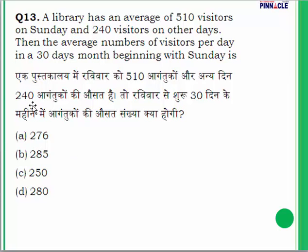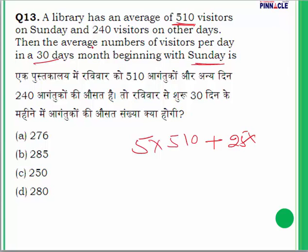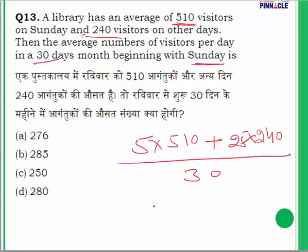Question 13: A library has an average of 510 visitors on Sunday and 240 visitors on other days. In a 30-day month beginning with Sunday, there are 5 Sundays and 25 other days. Total visitors: (5 × 510) + (25 × 240) = 2550 + 6000 = 8550. Average per day: 8550 ÷ 30 = 285.